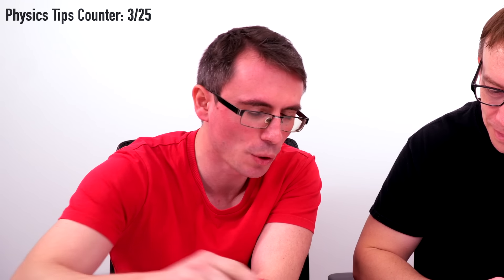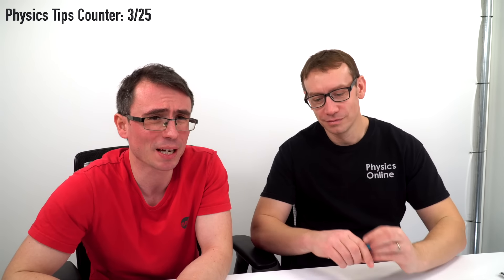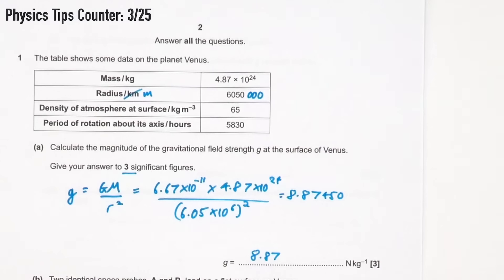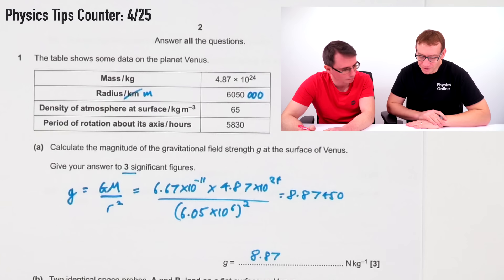Nicely spotted — not everyone would have spotted the three significant figures. Just have a good scan of the question to see exactly what you're being asked to do. If it was 10 times bigger that would be 88, which would be massive — a lot more than Earth. And Venus is going to be similar in size to Earth, so 8.87 is within the right order of magnitude. Easy marks.